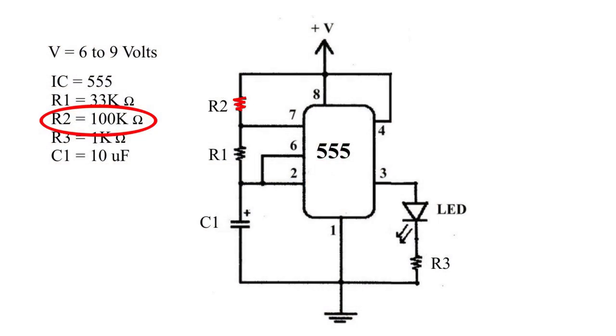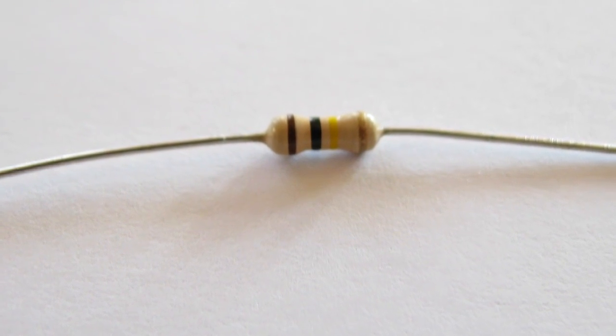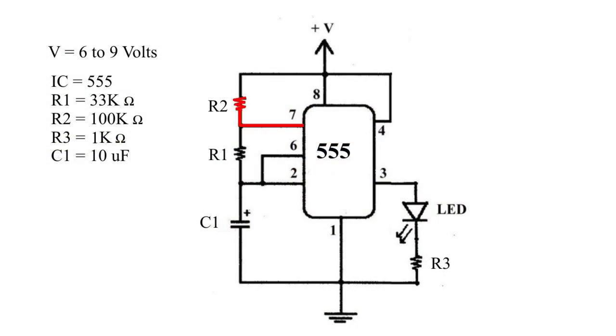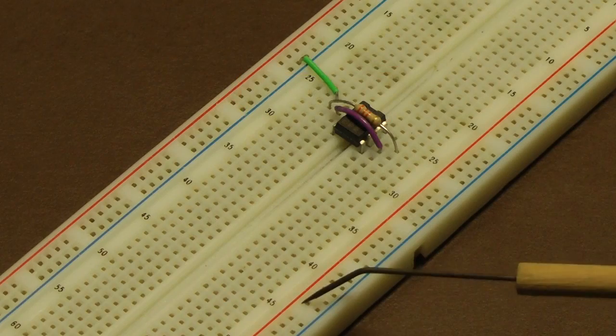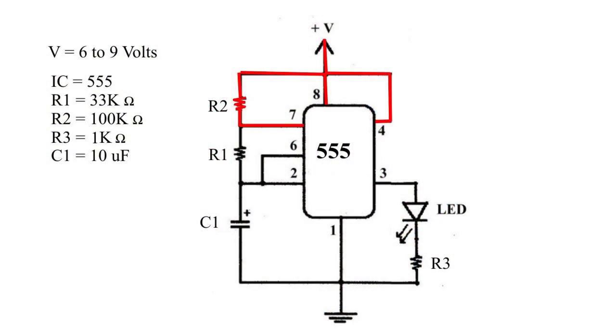Next we will connect R2. R2 is 100,000 ohms, color bands brown, black, yellow. This is where circuit diagrams can be confusing. We see that R2 connects one end to pin 7. The other end offers some choices: pin 8, pin 4, or the positive supply line from our battery. The positive supply line is the row of holes beside the red line. Any of these three choices would work. In a case like this, choose the easiest connection to make. I would choose pin 7 to the positive supply line, the holes beside the red line.